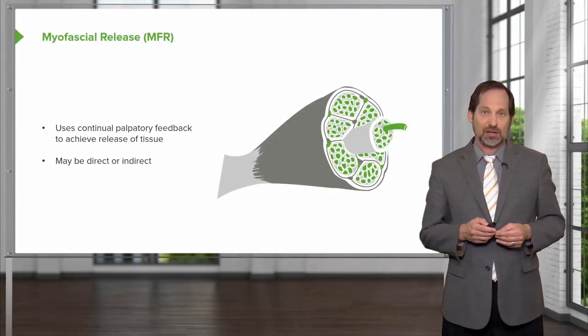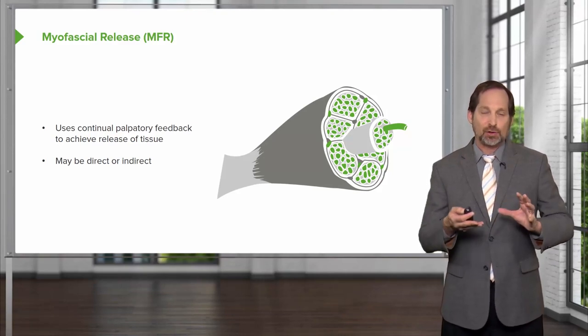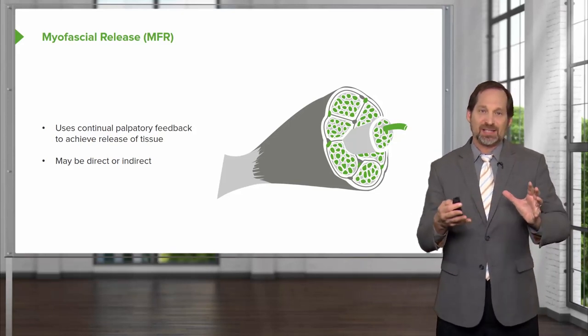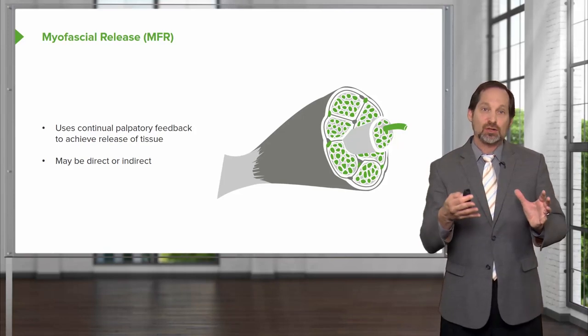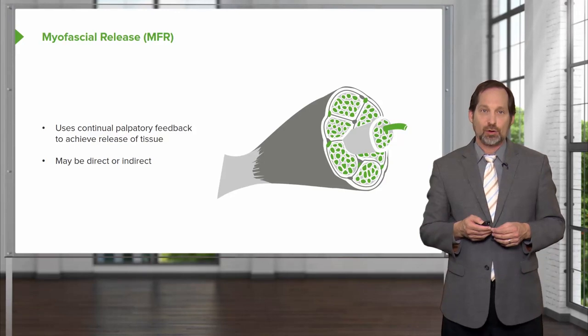The next type is myofascial release. Myofascial release uses continued palpatory feedback, seeing which way the body wants to go, taking it in the position of ease, the position of motion it wants to go into and goes into easiest, and then flows in that direction to help ease motion.